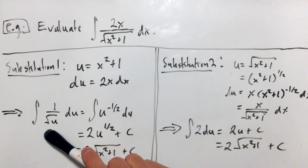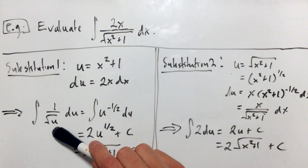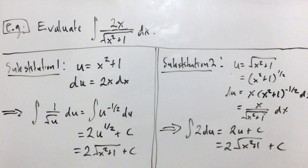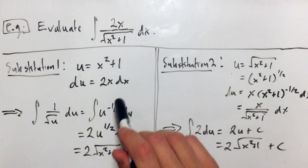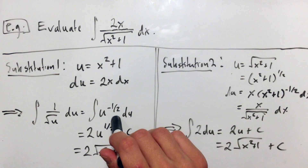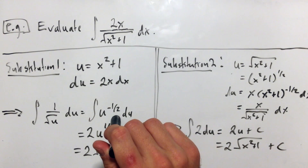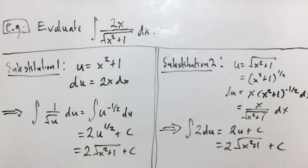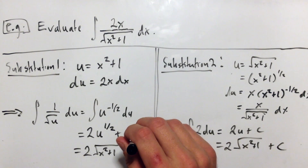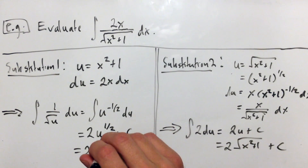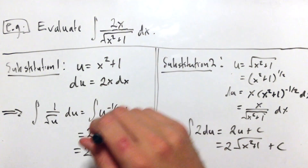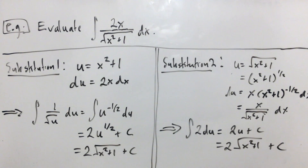The square root of u is the one-half power, and since it's in the denominator I get u to the minus one-half. Integrating with the power rule, I add one to negative one-half to get u to the one-half, then divide by the new power. Dividing by one-half is the same as multiplying by two. Finally, I replace u with x squared plus one and write the square root, giving two root x squared plus one plus c.